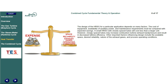However, closely spaced tubes may increase combustion turbine exhaust back pressure and result in decreased turbine efficiency. Other important factors influencing design include the available space, desired reliability, nature of the exhaust gases, and process operating conditions.